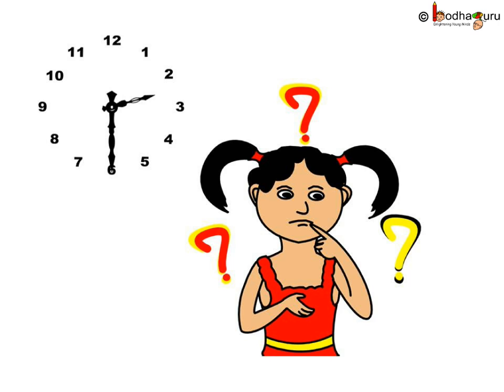So we know when the minute hand is at 12, then we can look at the hour hand and tell what time it is. But if the minute hand is not at 12, like in this diagram, what time is it?